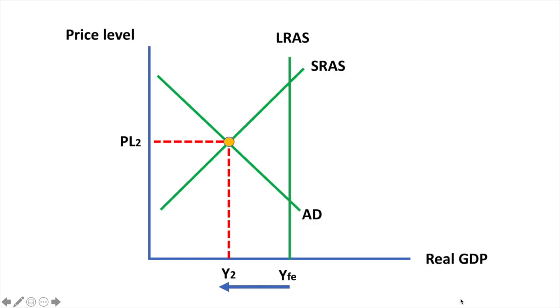If the initial position was both short-run and long-run equilibrium, then this change could be the result of a decrease in consumption, investment, government spending or net exports.